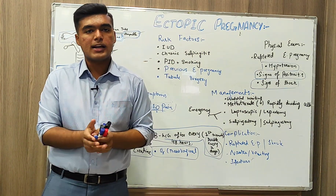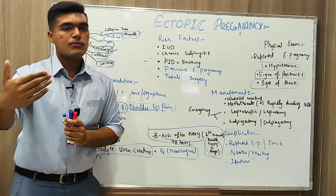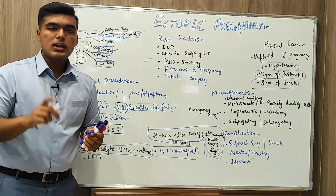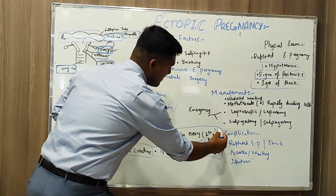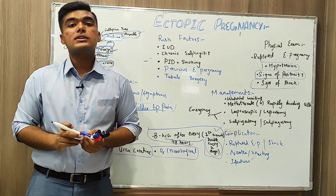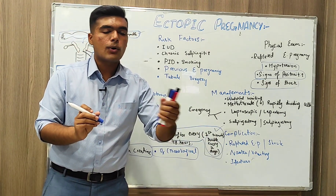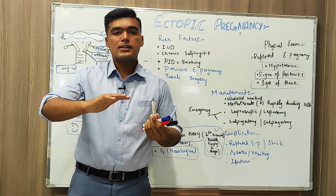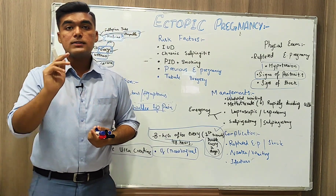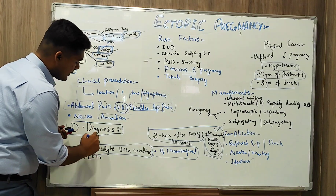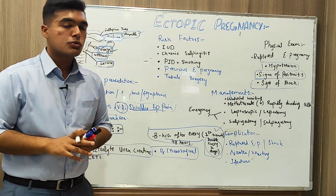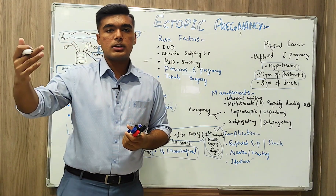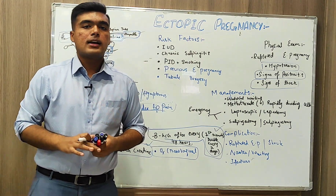For differential diagnosis we have two key investigations. Beta-HCG is very important because it tells us whether pregnancy is present; in the first trimester, HCG levels double every two days. Full blood count tells us about anemia or blood anomalies. Electrolytes and urea creatinine indicate urinary and kidney abnormalities, and LFTs assess liver function.